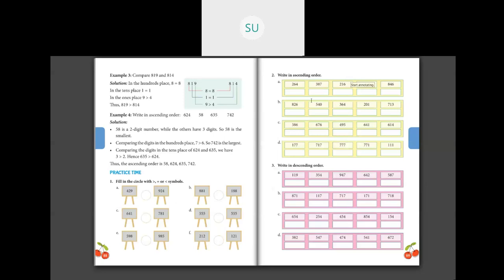Let's solve problems. Ascending order — arrange from smallest to largest. For 264, 387, 216, 784, and 846: starting with 216, then 264, then 387, then 784, and last 846. For the second set — 826, 540, 364, 201, 713: the order is 201, 364, 540, 713, and then the greatest is 826.